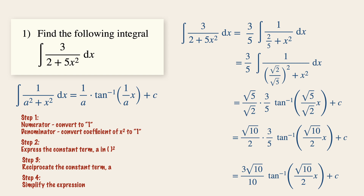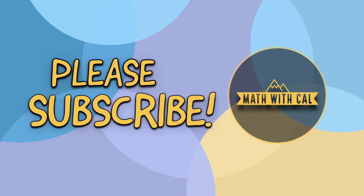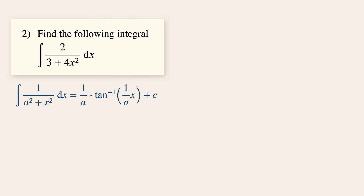Before we move on to the next example, do remember to hit the subscribe button to see more valuable content. Now let's try this next example to solidify our understanding. In the numerator there is a constant term which is 2, and in the denominator the two terms are connected by a plus sign, with an x squared term.